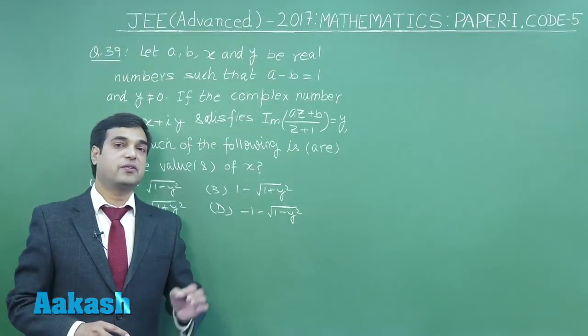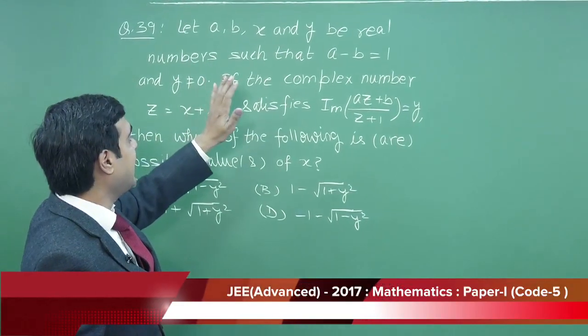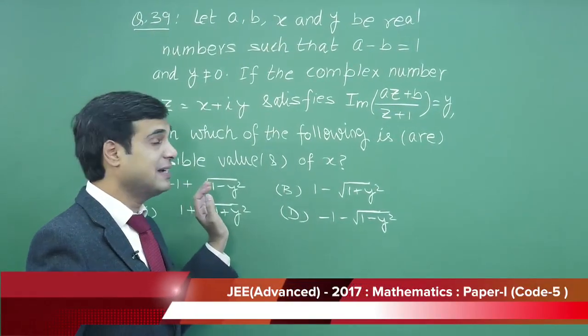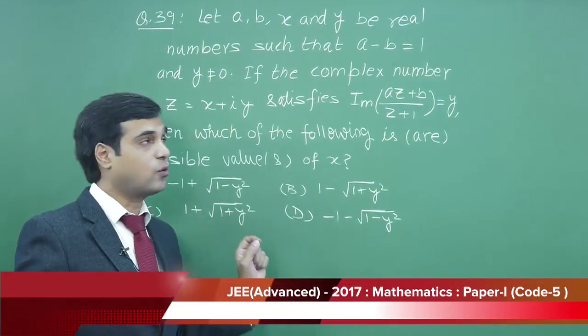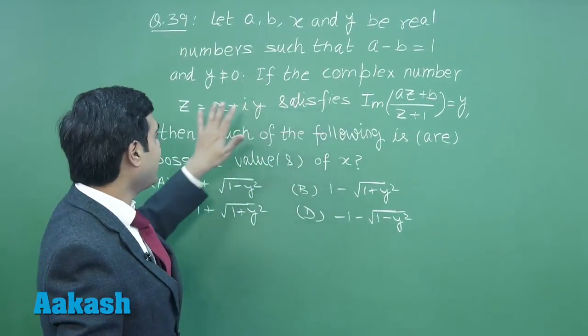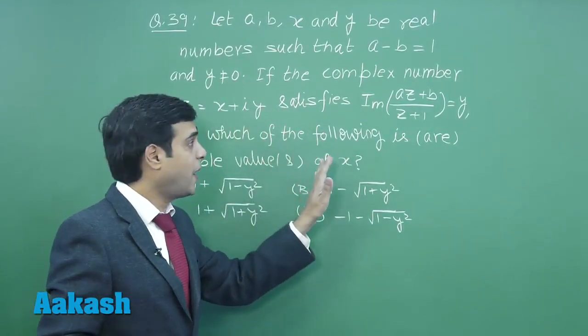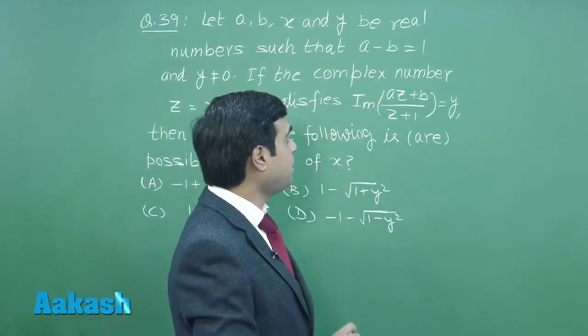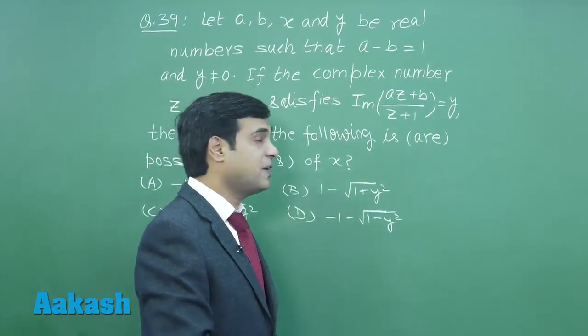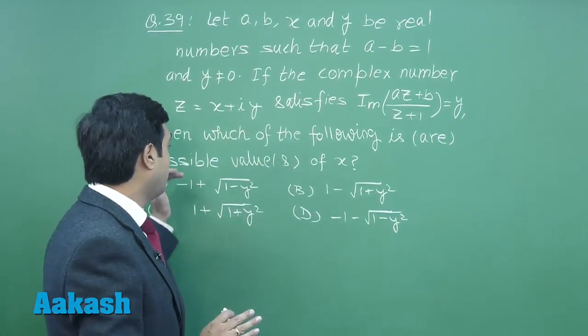Let's take question number 39. Let a, b, x and y be real numbers such that a minus b equals 1 and y is non-zero. If the complex number z equals x plus iota y satisfies imaginary part of (az plus b) upon (z plus 1) equals y, then which one of the following may be a possible value for x?